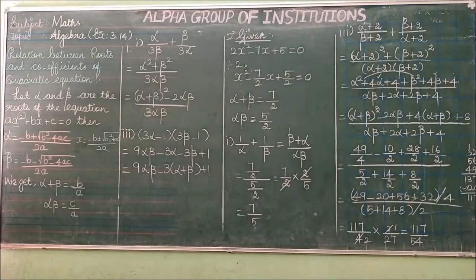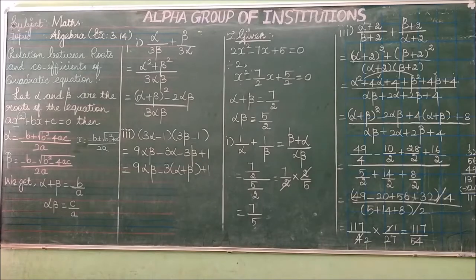The three methods are: first, factorization; second, completing the square method; and third, the formula method.